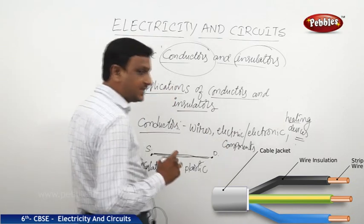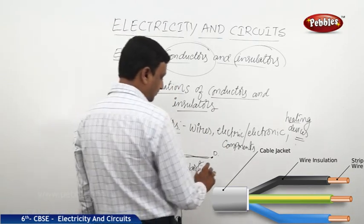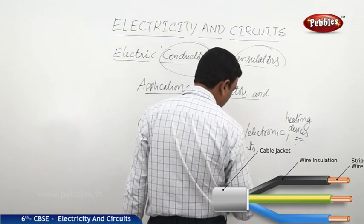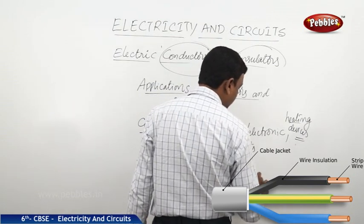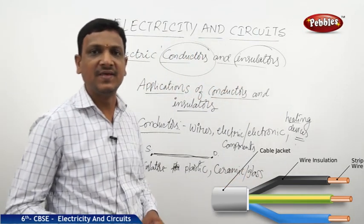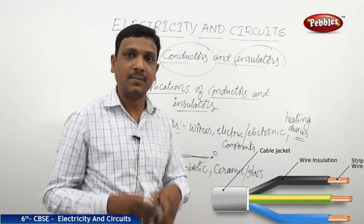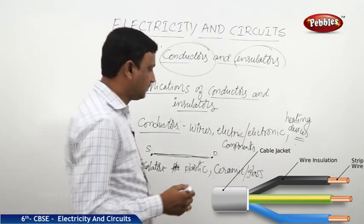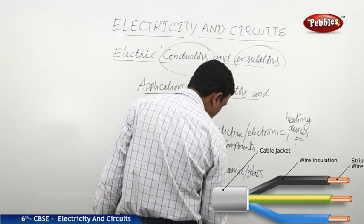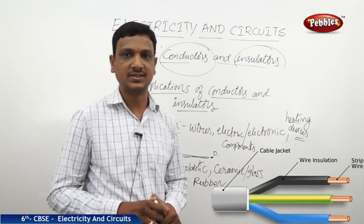Plastic is used extensively as an insulator. In some places, ceramic or glass is used. When electricians are working, they wear rubber gloves because rubber is an insulator — it prevents electric shock. These are the main applications of conductors and insulators.